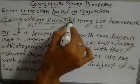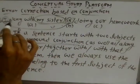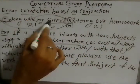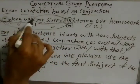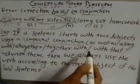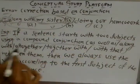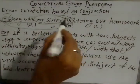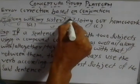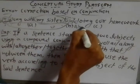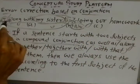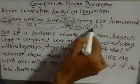The accurate verb here is 'am'. So the correct sentence is: 'I along with my sister am doing our homework.' Because when a sentence starts with two subjects joined by a compound conjunction — 'as well as', 'along with', 'altogether', 'together with' — the verb should always agree with the first subject. 'Am' is used in place of 'is'. This is correct.